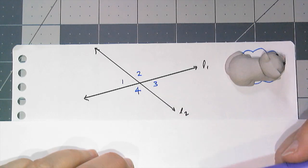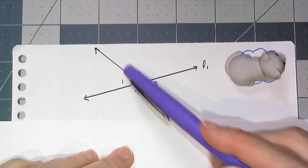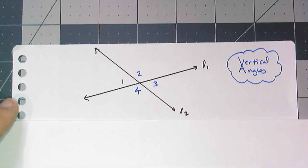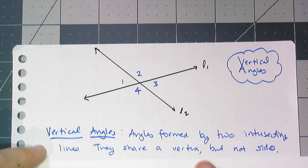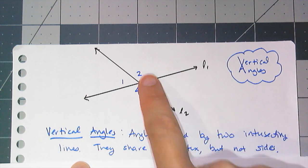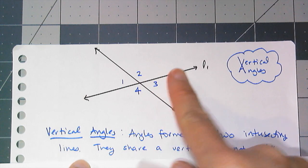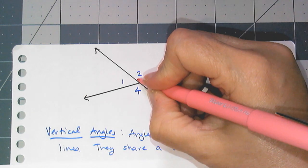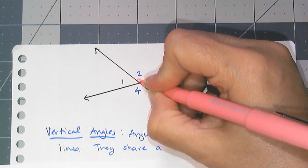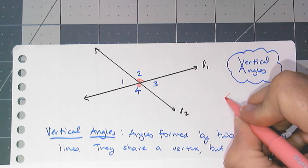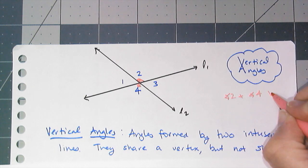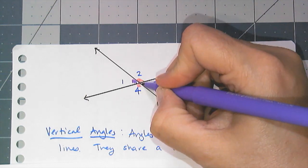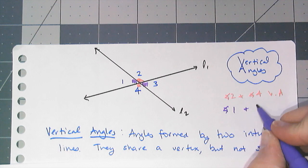Now let's look at another set of angles that are familiar to you. When you see two lines intersecting and four angles are formed, your brain should think vertical angles. They are angles formed by two intersecting lines — they share a vertex but they don't share a side. The vertical angles shown in this drawing are angles two and four, and also angles one and three are vertical angles.